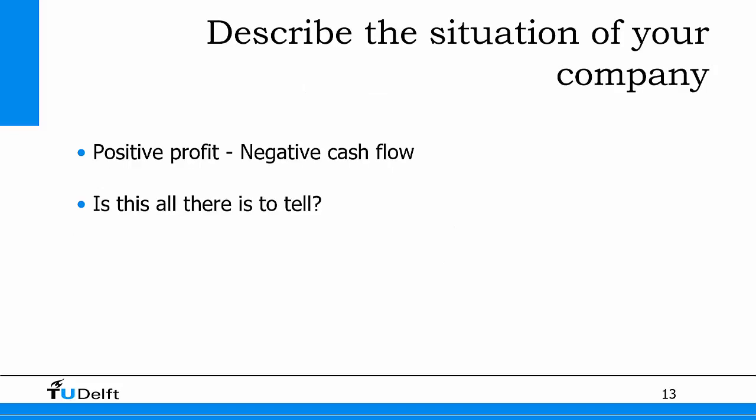So in year one you had a profit but negative cash flow; things are improving. Beyond the profit and loss statement and cash flow, you can also produce a balance sheet. A balance sheet is always a snapshot at a moment in time, whereas the P&L and cash flow cover a full year. You can make a balance sheet at the start of the company, at the end of year one, and again at the end of year two.